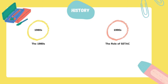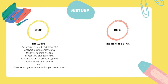In the 1980s, product-related environmental analysis was complemented by investigation of social aspects and economical aspects of the product system. The formula is: PLA equals NA plus LCA plus social aspects plus economical aspects, where LCA equals inventory plus environmental impact assessment.